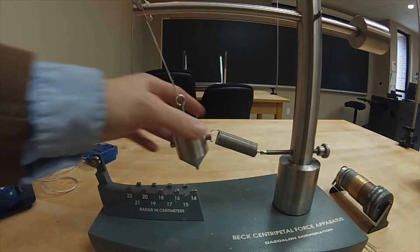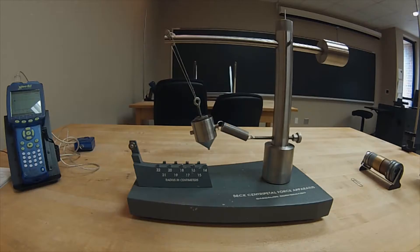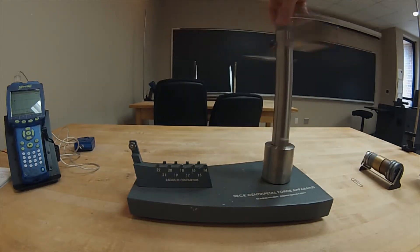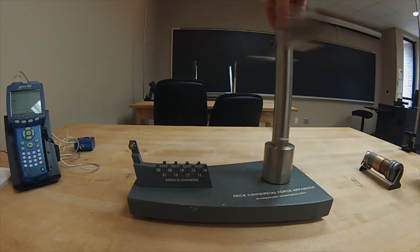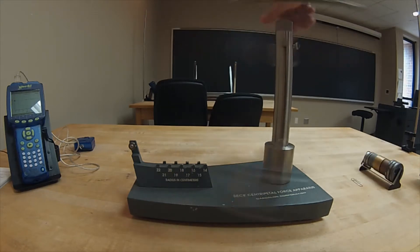Once the spring and the bob are situated in the centripetal force apparatus, ready a stopwatch and then begin to spin the apparatus from the top of the central column. As you spin the apparatus faster, you may notice that the bob starts to move along the radial direction, perpendicular to the direction of the rotational motion.